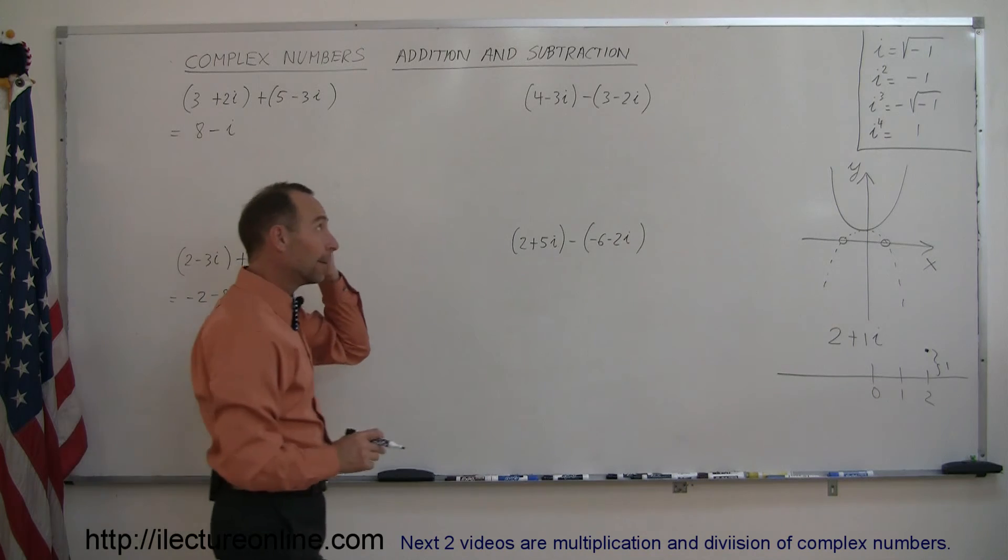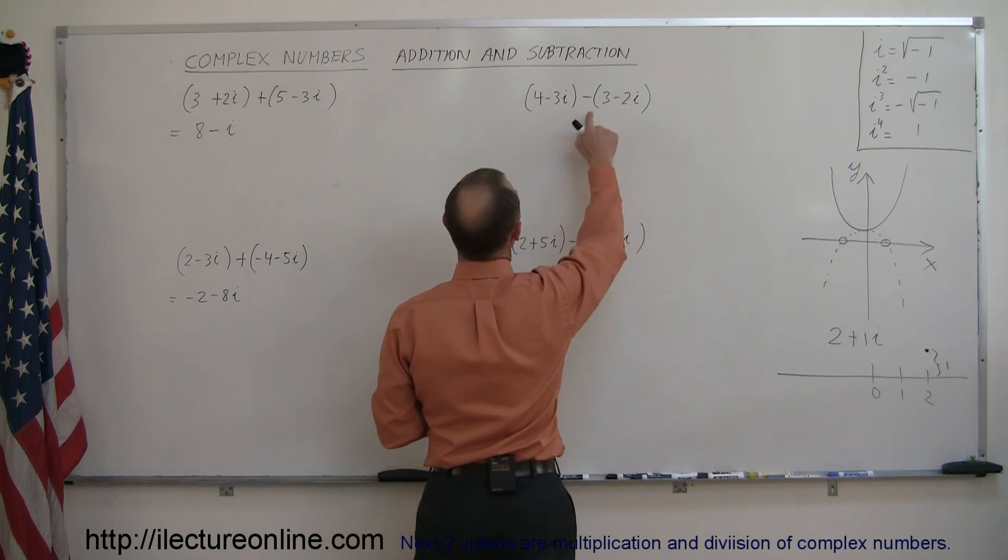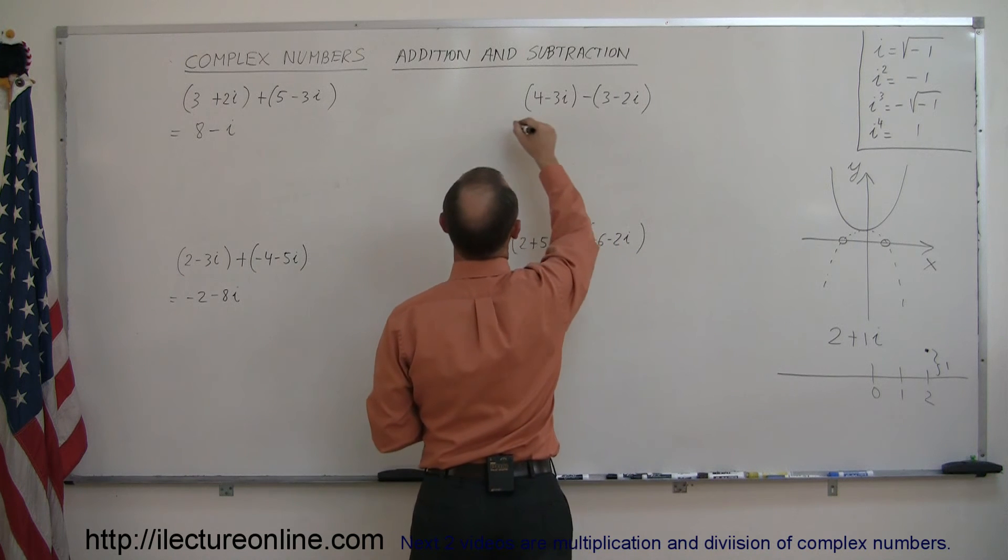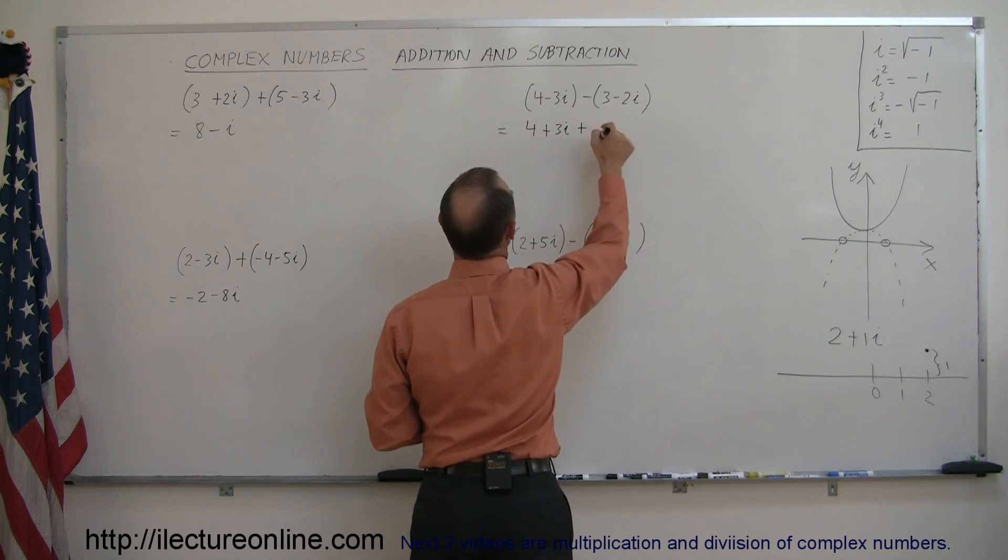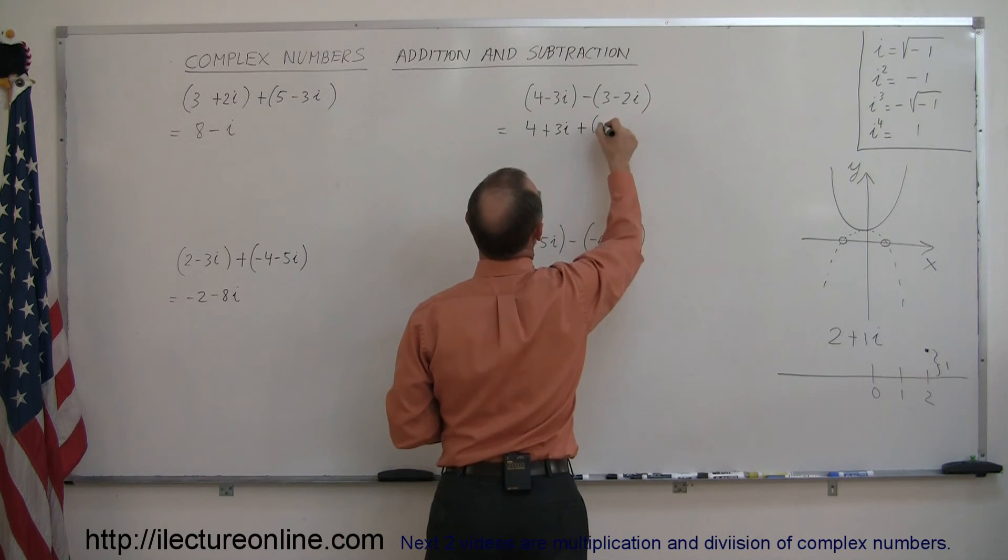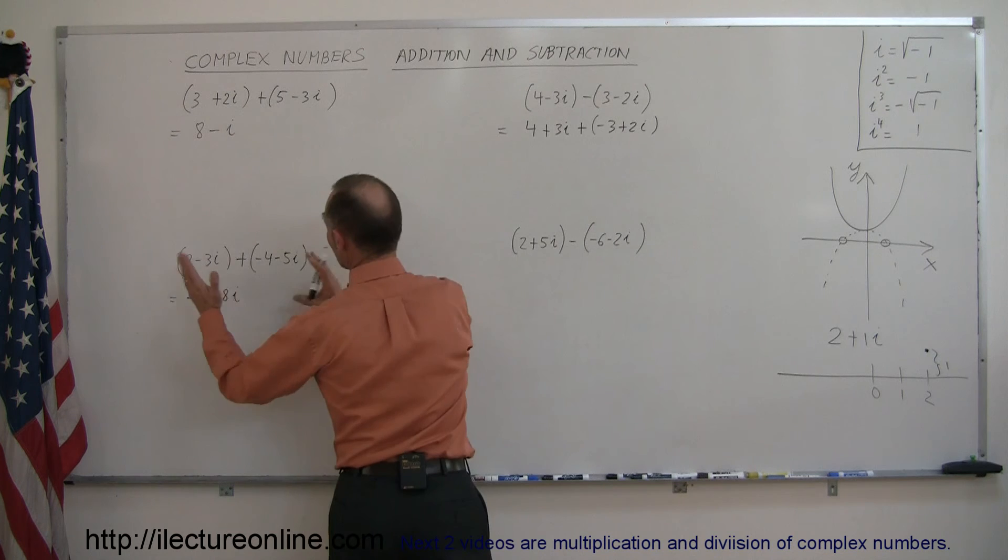When you subtract, you probably want to turn it into an addition, so the easiest way to do that is simply to apply the negative sign first, and write this as 4 plus 3i plus, and then change all the signs inside, minus 3 plus 2i, and then you go ahead and do exactly the same as before.